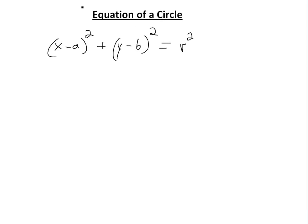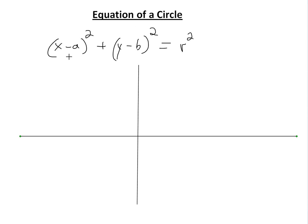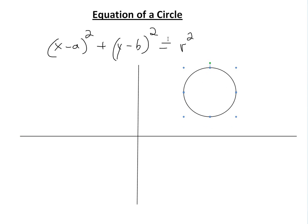What this is saying is, if you have the y and x axis, your circle is going to be somewhere around here. Basically, a and b represent the shifting of where the circle is — the center point is at a and b. The x axis shifts by a, b shifts vertically, and r is actually the radius throughout the whole circle.